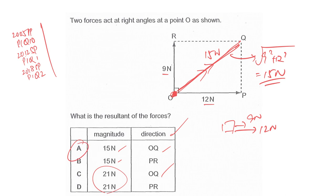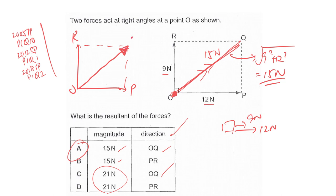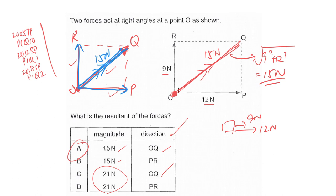Now if I modify this question so that there are three forces acting on point O — OR, OQ, and OP — the answer changes. The resultant of OR and OP, which we just calculated, is 15 Newton in the direction of OQ. But don't forget the existing force OQ is also 15 Newton. So the total resultant force becomes 30 Newton in the direction OQ.